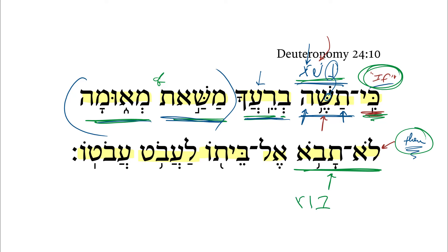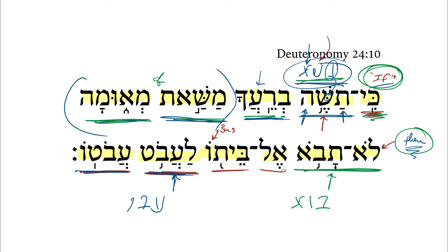then you shall not enter — a qal imperfect second masculine singular of the verbal root 'bo' — you shall not enter to his house, with a third masculine singular pronominal suffix there, to take the deposit of his deposit. So you shall not go get the thing that you loaned out with pledge. We've got a qal infinitive construct here, with a cognate accusative with a third masculine singular pronominal suffix. You shall not enter to his house to take the deposit of his deposit, or to take what he owes you.